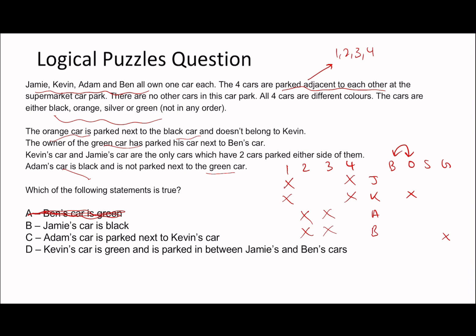Adam's car is black and is not parked next to the green car. Since it doesn't matter which end Adam is on — the whole arrangement could be flipped — let's say Adam is on the far left and Ben is next to him. Adam is black; black is next to orange; Adam is not next to green — so Ben's car can't be green, meaning the car on Adam's other side must be green, and Ben's must be silver.